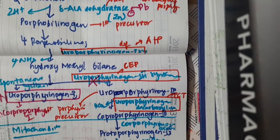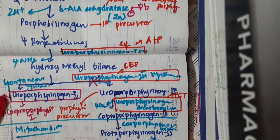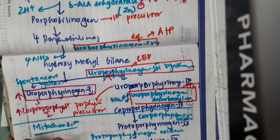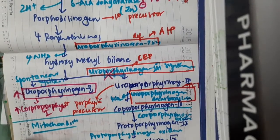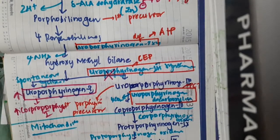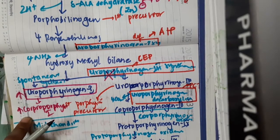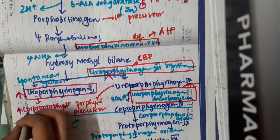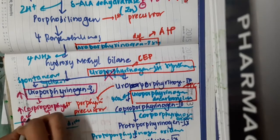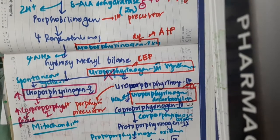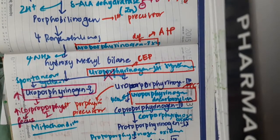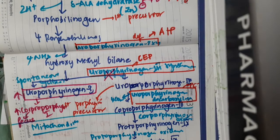Coproporphyrinogen-1 is also increased. Because of increased uroporphyrinogen-1 and coproporphyrinogen-1 due to deficiency of the enzyme uroporphyrinogen-3 synthase, both accumulate in bone marrow, RBC, and plasma. This coproporphyrinogen-1 is prominently seen in feces and is the prominent porphyrin detected in feces.